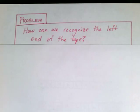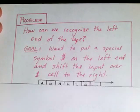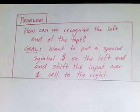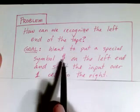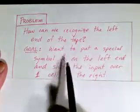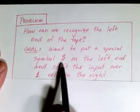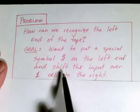The first thing we'd like to be able to do is recognize the left end of the tape. As you know, we can't move our tape head to the left beyond the left end of the tape. And there's no way built into the definition of Turing machine to detect when we're at the left end. But it would be useful to be able to do this. So what we're going to do is put a special symbol. We're going to create a new symbol that's not already in our alphabet. We'll use the dollar sign for this use. And we want to squeeze it in somehow on the left end.